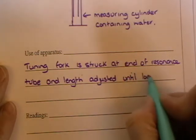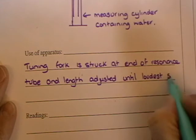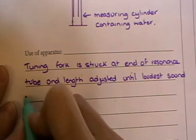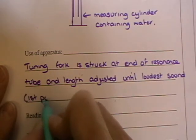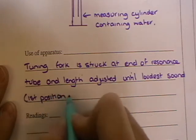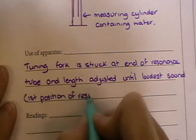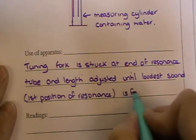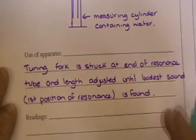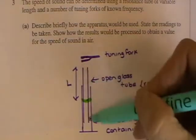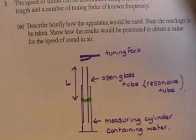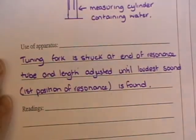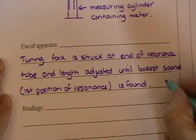Until the loudest sound, the first position of resonance, is found. Now that means that you might have to move your tube up and down until you're absolutely certain that's the place where you would find it. So that will get you one mark there.